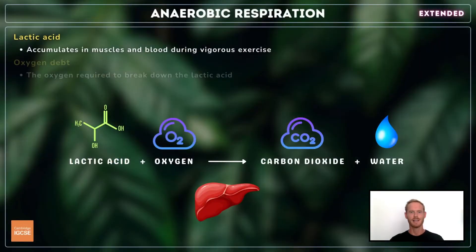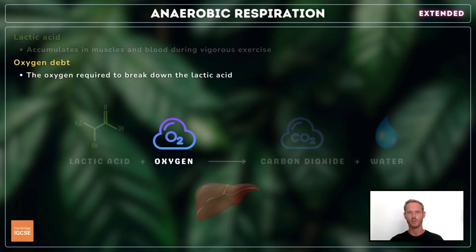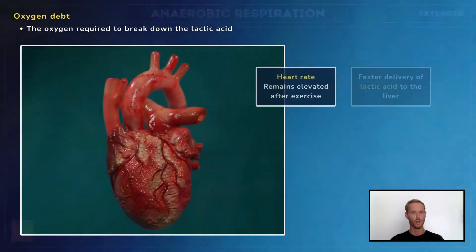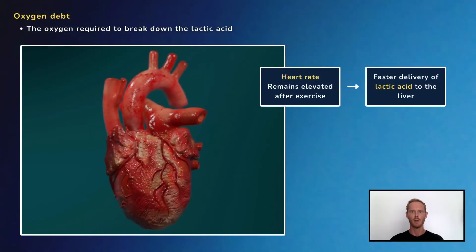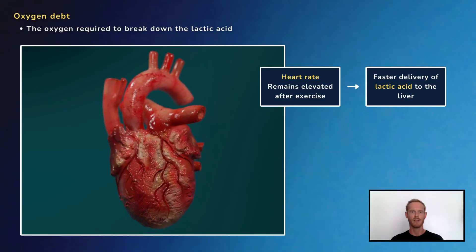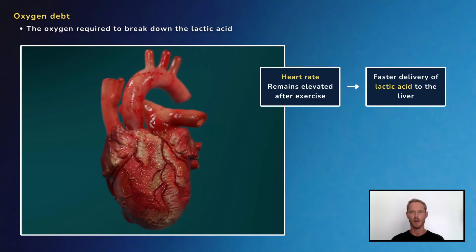Only when resting can sufficient oxygen be delivered to break down the lactic acid and for the muscles to regain their function. Lactic acid is broken down into carbon dioxide and water by aerobic respiration in the liver. The oxygen required to break down the accrued lactic acid is termed the oxygen debt. In order to repay this debt, after a period of high-intensity exercise, heart rate remains elevated for some time.